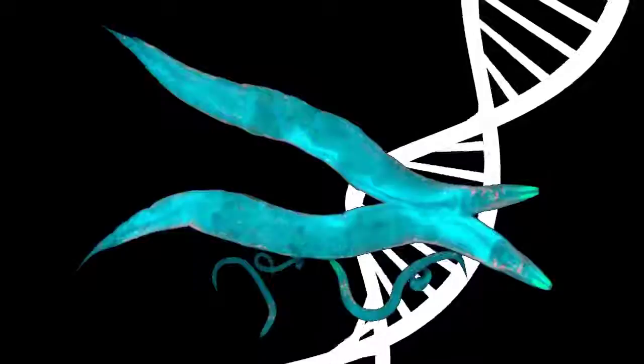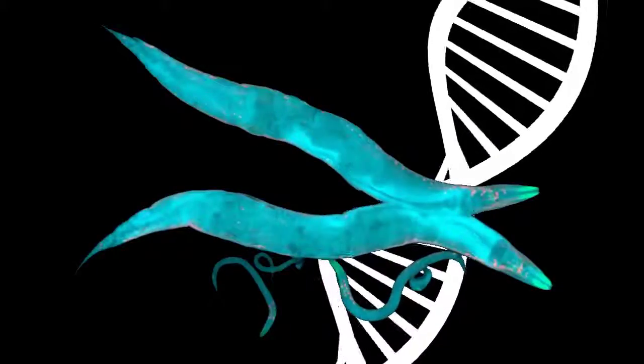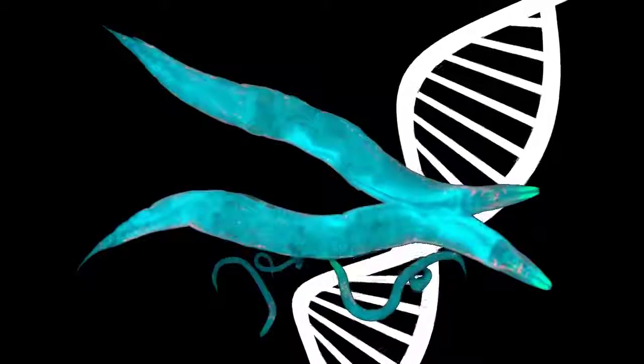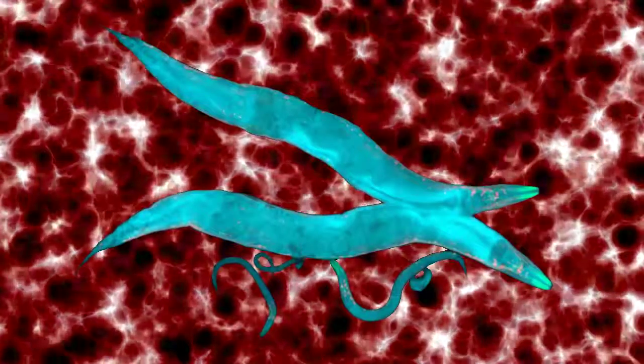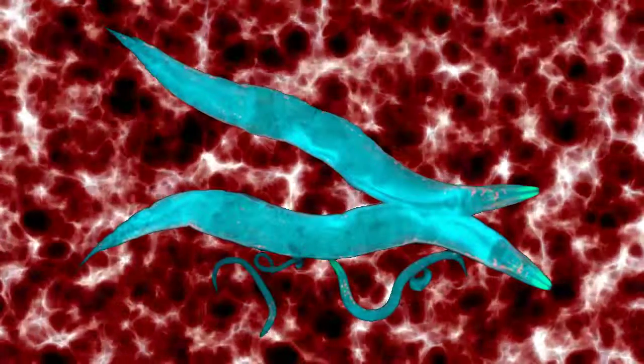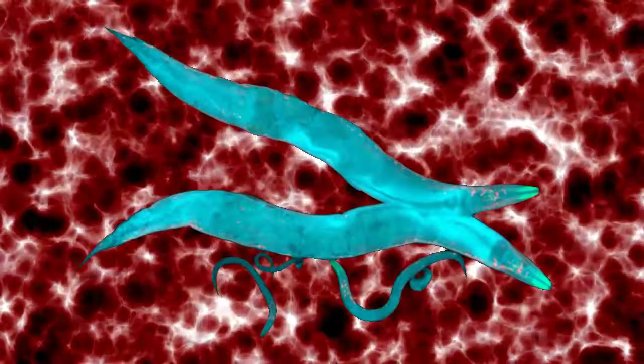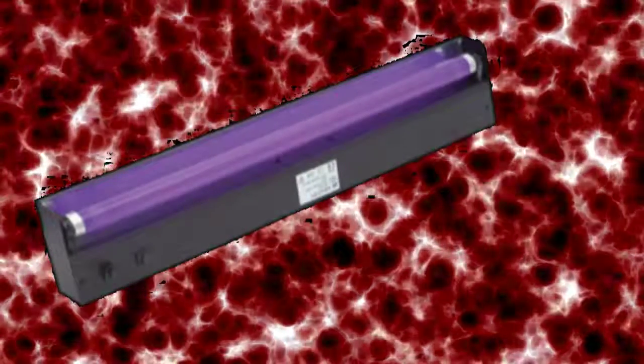These scientists added a transgene to the worms which carried a fluorescent protein. This enabled them to track the pattern of genetic inheritance through the generations of worm. All that was needed to see if the gene was passed on was an ultraviolet light.